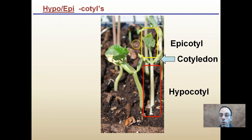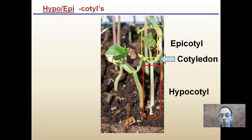Hypo and epicotyls — the epicotyl and hypocotyl are both in relation to the cotyledon leaves. This is clearly a dicot because there are two seed leaves. The stem region below those two seed leaves is called the hypocotyl — hypo meaning below or under. The epicotyl is above those two cotyledons, or seed leaves. If asked to identify the epicotyl or hypocotyl, these would be the regions you'd be looking at.